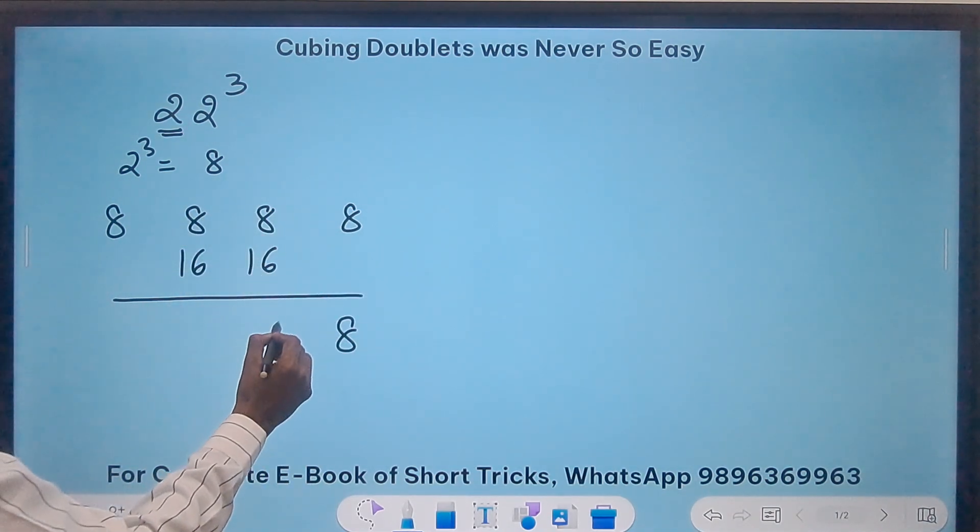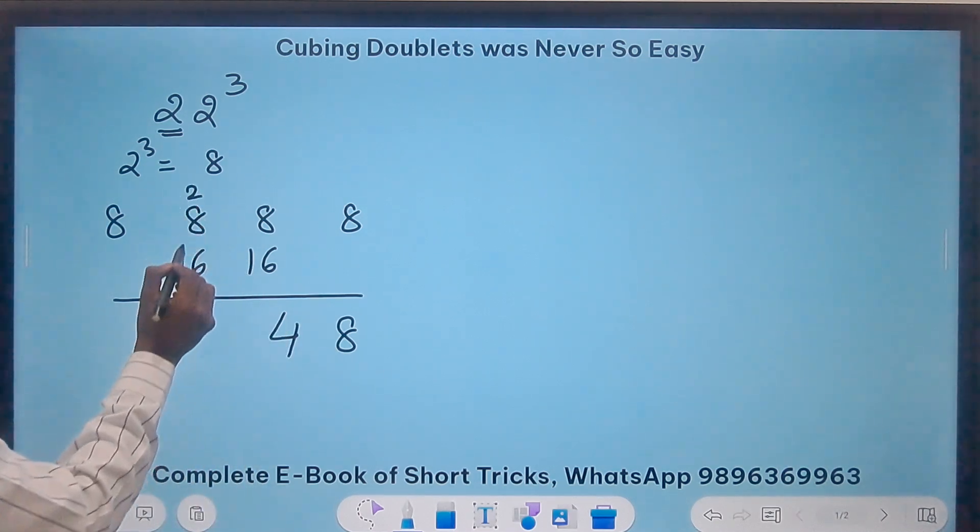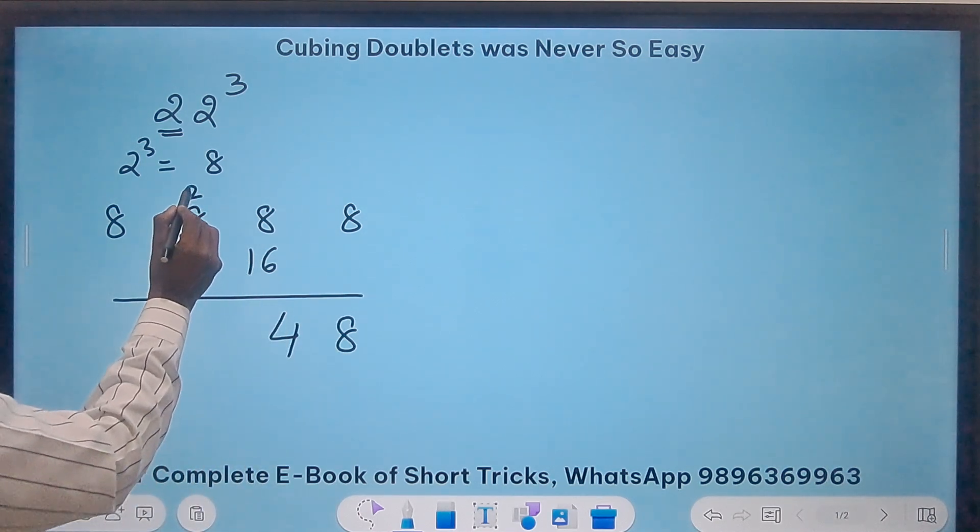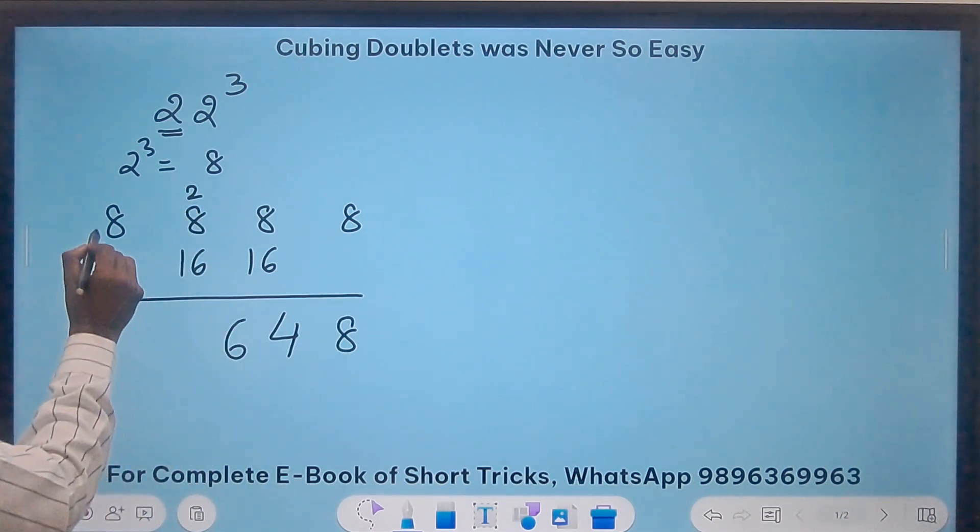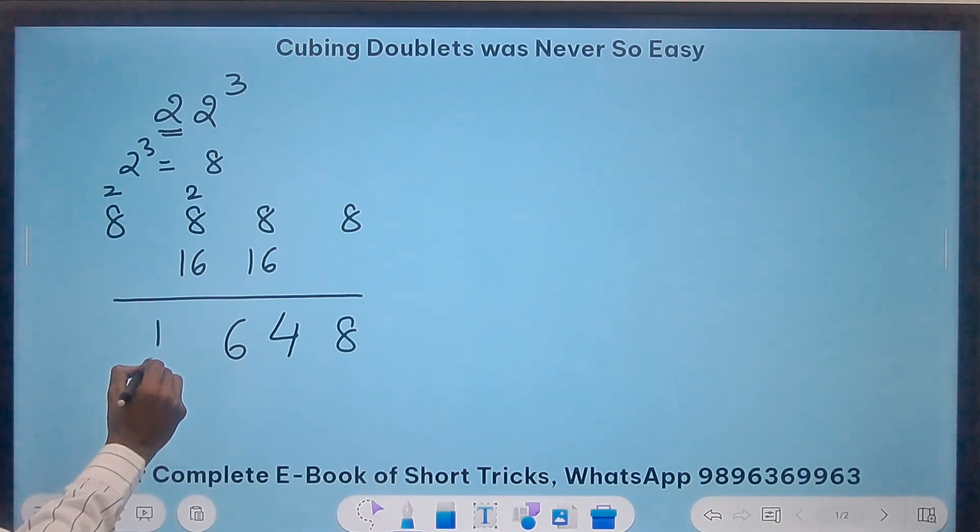8 plus 16 is 24. So 4 and a 2 carry. 16 plus 8 is 24 plus 2, 26. So 6 and a 2 carry. 8 plus 2 is 10.